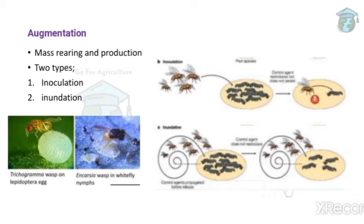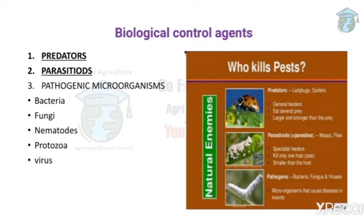This is why the inoculation process is time-consuming — natural enemies are released in a small amount, so it takes time for them to increase their population and kill all the pests. Next is inundation: natural enemies are released in large numbers with the intention of destroying pests quickly. In inoculation it is a slow process, but in inundation the goal is to destroy pests fast. When large numbers are released, they feed on pests and decrease the pest population rapidly. This is augmentation.